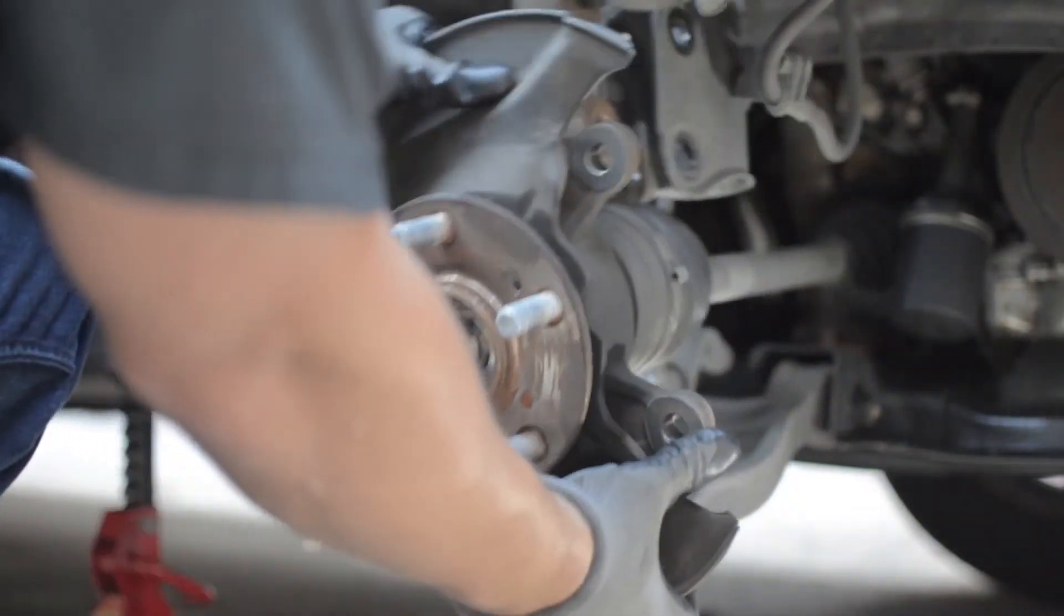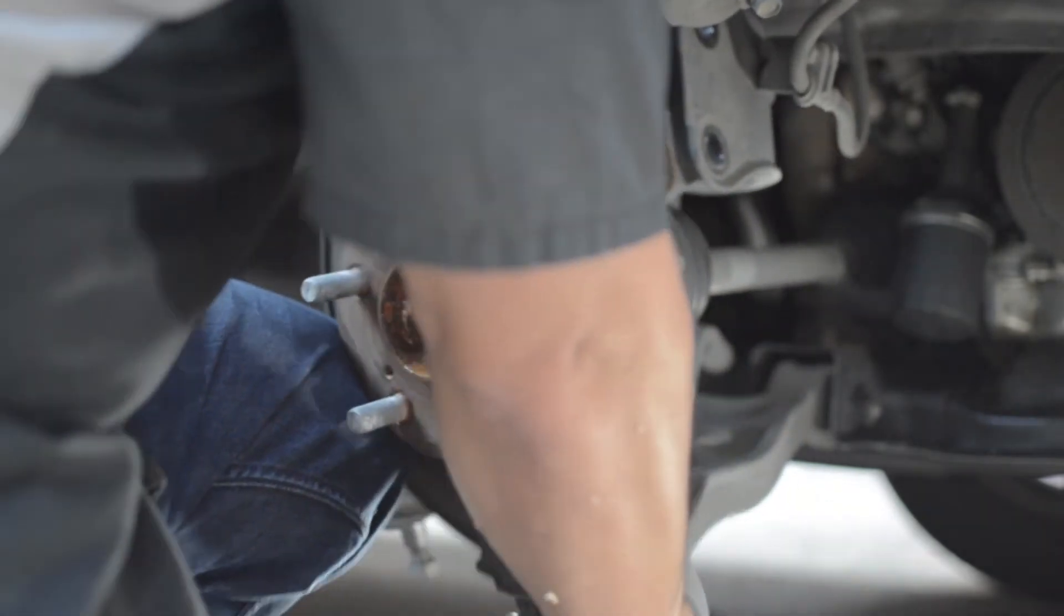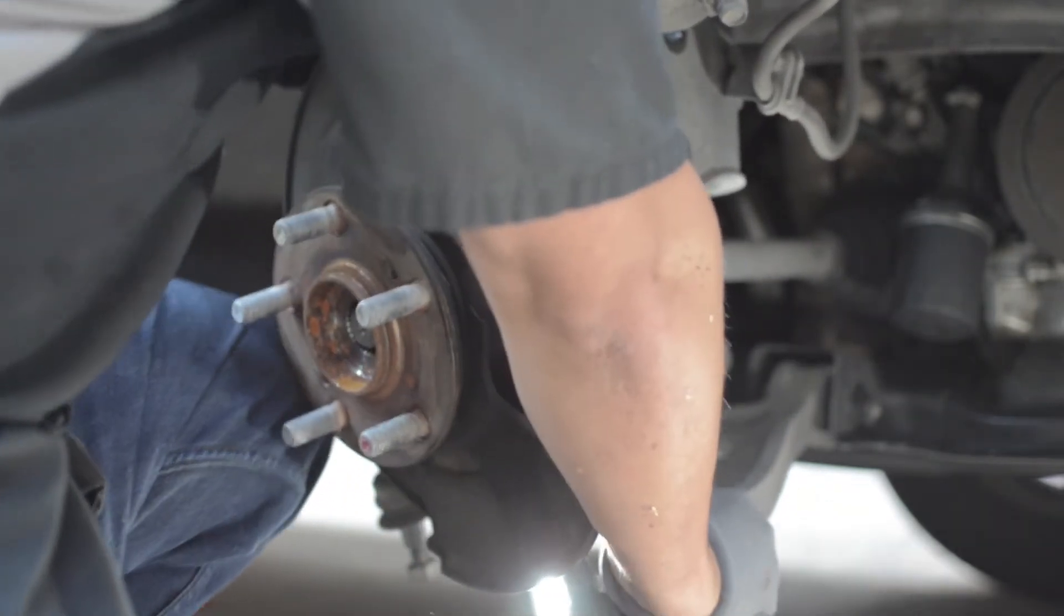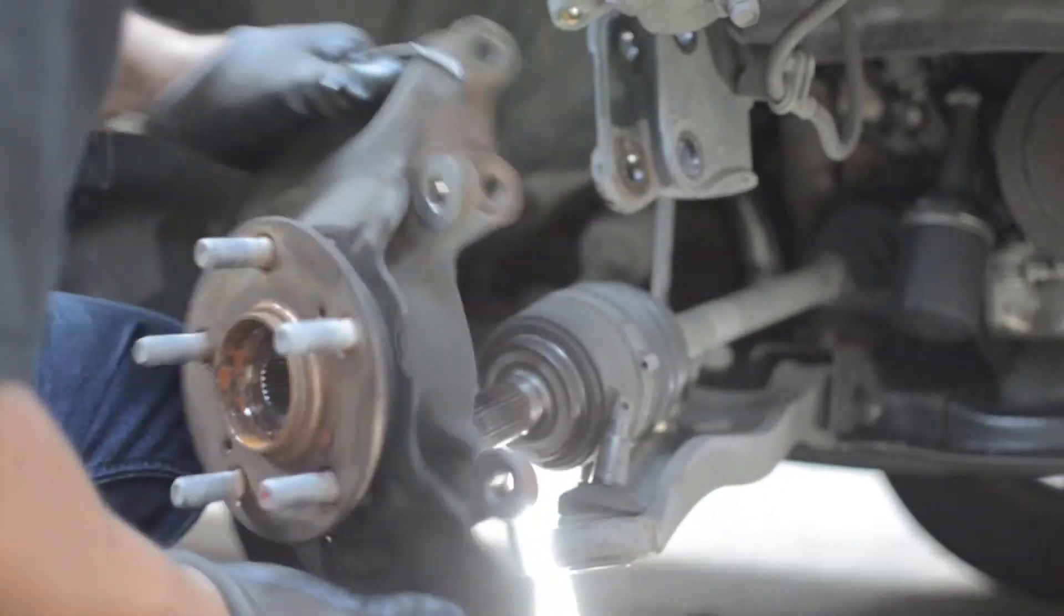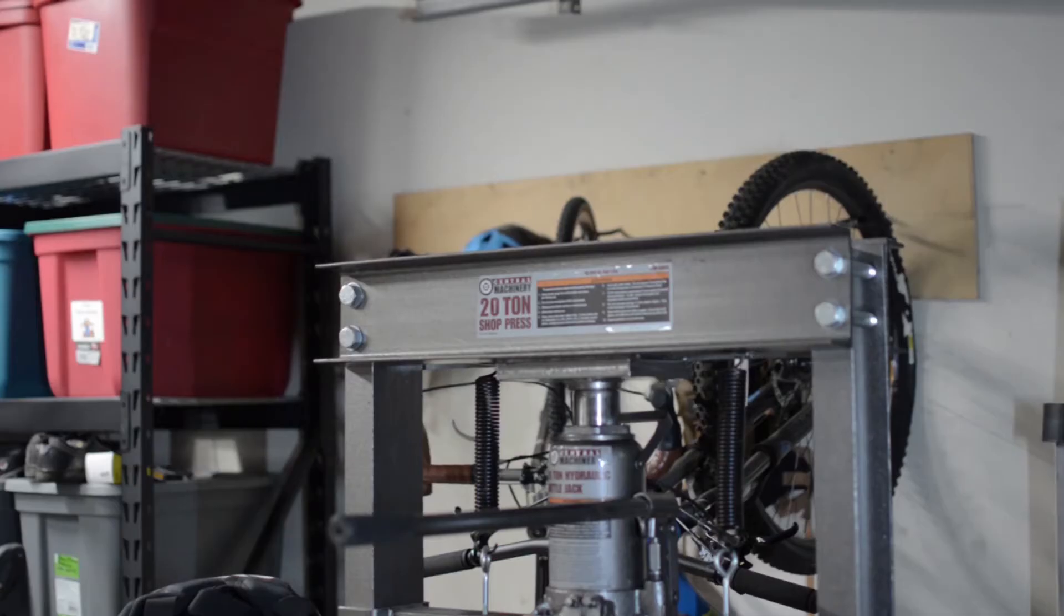Now once everything's already removed, let's take it out. Look at this—the piece off the bearing came off, part of the exciter ring for the ABS sensor. That's what's causing the problem with the ABS code. Now we'll remove the wheel bearing using a 20-ton shop press.